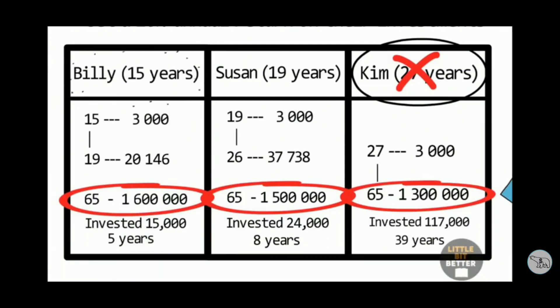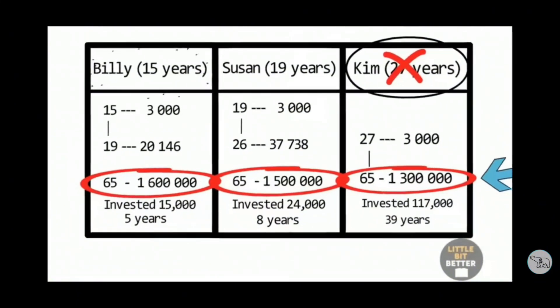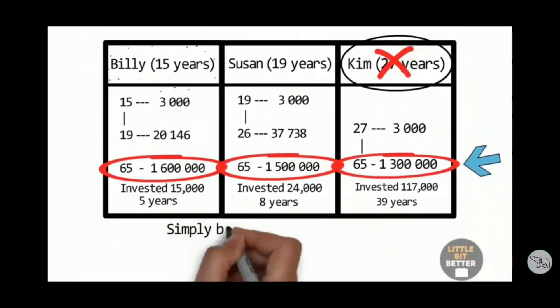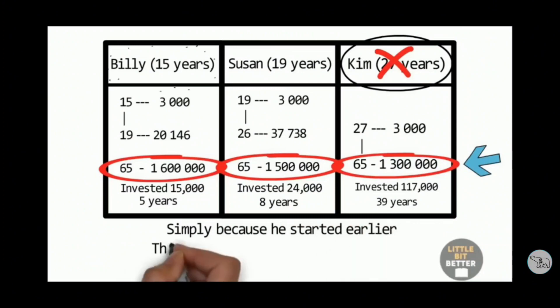As you can see, Billy has the least amount of time and money invested, but despite that, he ended up with the biggest amount of money. Why? Simply because he started earlier. This is the power of time in investing. So you can see, the secret is actually starting very early. The sooner you start compounding, the bigger the amount is going to be at the end.